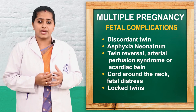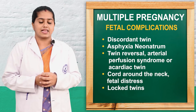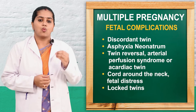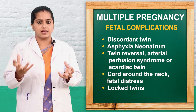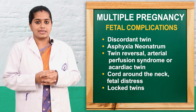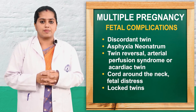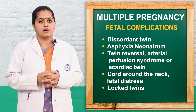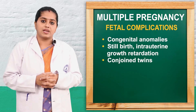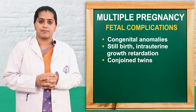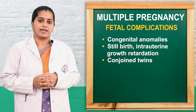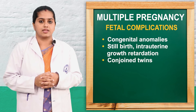Intrauterine growth retardation and neonatal asphyxia can also occur. In twin arterial reverse transfusion sequence, one twin does not have a heart and the other twin acts as donor while the acardiac twin is the recipient. Other fetal complications include cord around the neck, fetal distress, fetal death, interlocking twins, congenital anomalies like microcephaly, neural tube defects, and Siamese twins.